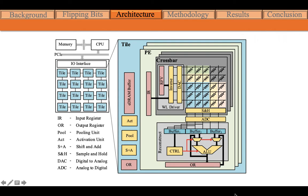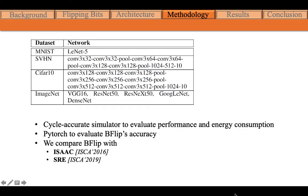Our accelerator communicates with CPUs through the PCIe bus. The internal organization of the B-Flip accelerator is similar to a previous design, ISAAC. Our modification is in the WLAN driver under the reconstruct unit. We tested eight network structures with four datasets. For MNIST, we used NET5. We constructed custom networks for SVHN and CIFAR-10. The ImageNet dataset is tested on five state-of-the-art CNN models. We used a cycle-accurate simulator to evaluate performance and energy consumption, and PyTorch to evaluate B-Flip's accuracy.